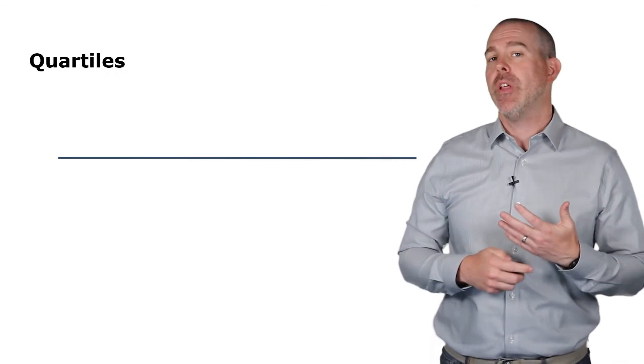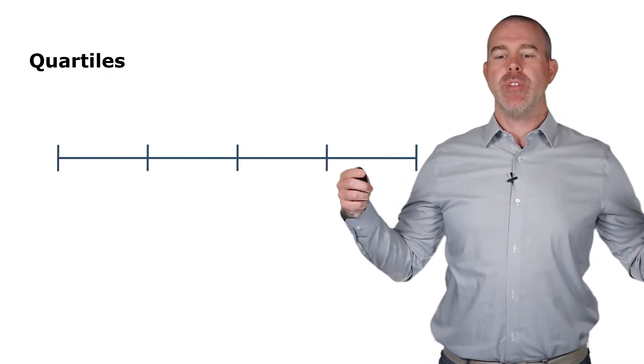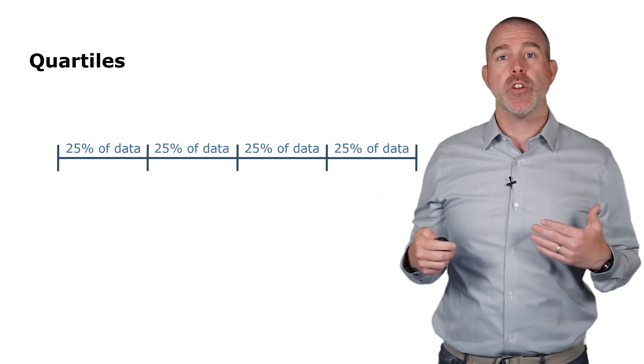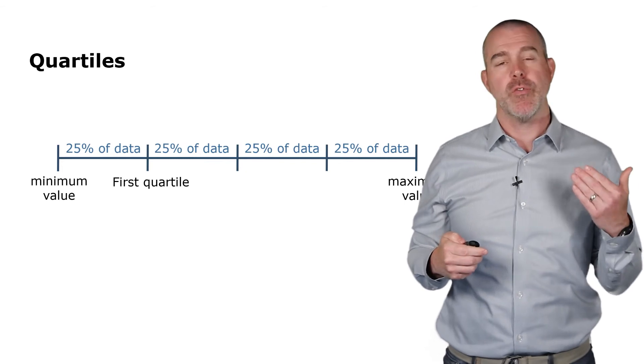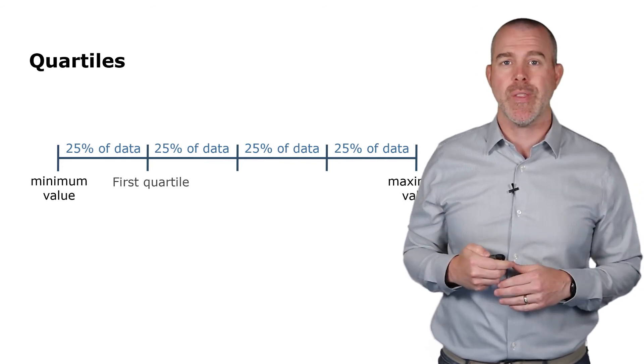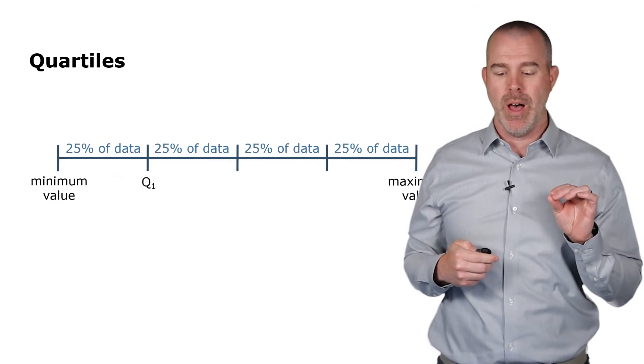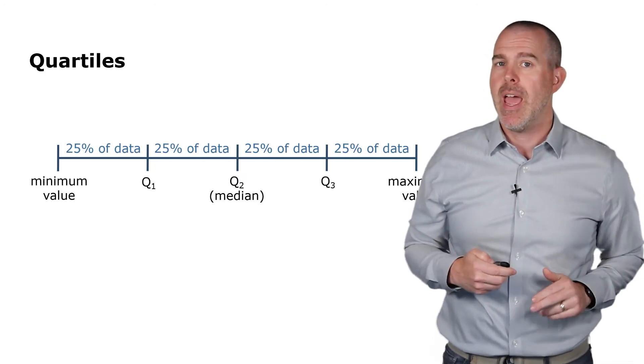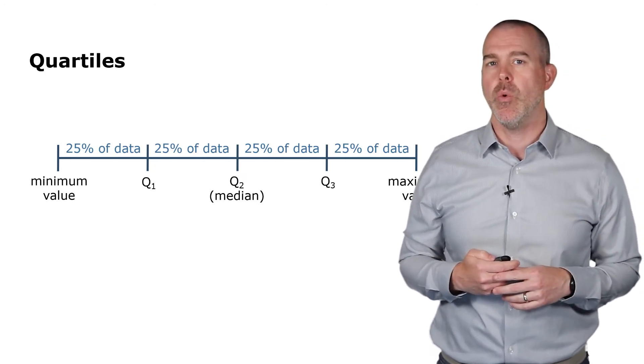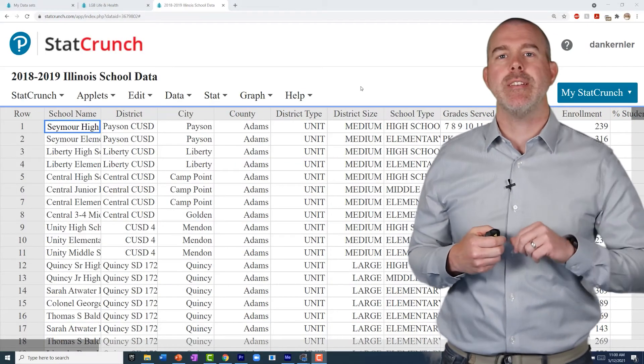In addition to percentiles, there are specific percentiles at the quarters called quartiles. If we have the interval of our data, split it up into quarters, 25% at each, we have the minimum, the maximum, and then the first quartile. The notation for that is q with a subscript of one. Then we have the second quartile, which is the median, the one in the middle. And then we have the third quartile, q3.